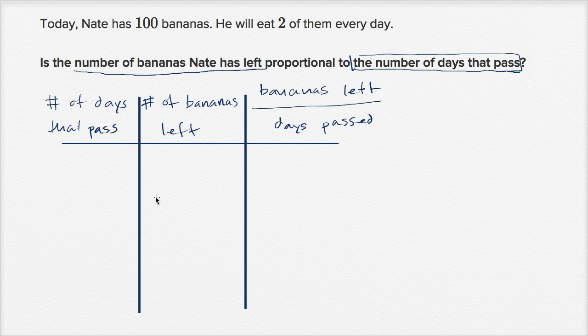Alright, so let's think about it a little bit. When one day has passed, how many bananas will he have left? Well that one day he will have eaten two bananas, so you're going to have 98 bananas left. And so what's the ratio of bananas left to days past? Well it's 98 over one, which is going to be equal to 98.